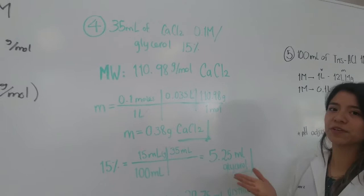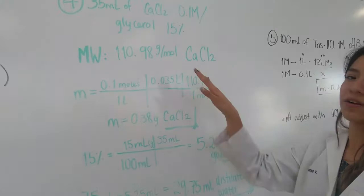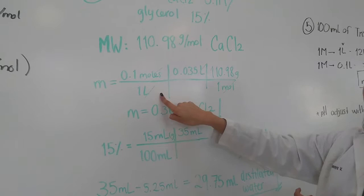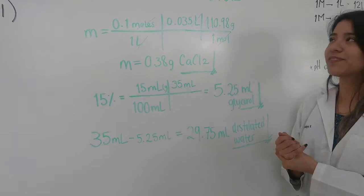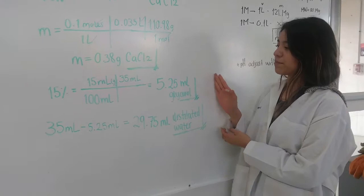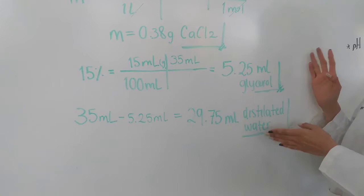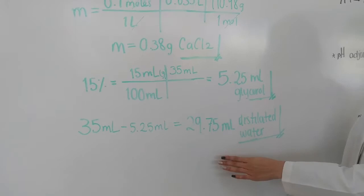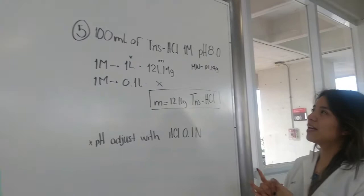For the fourth solution, we prepare 35 milliliters of calcium chloride at 0.1 molar with glycerol at 15 percent. We calculate the mass of calcium chloride using the molar formula: concentration multiplied by volume and molecular weight, yielding 0.38 grams. For the glycerol part, using a 50 percent stock, the required amount is 5.25 milliliters. The residual volume is filled with distilled water, which amounts to 29.5 milliliters.